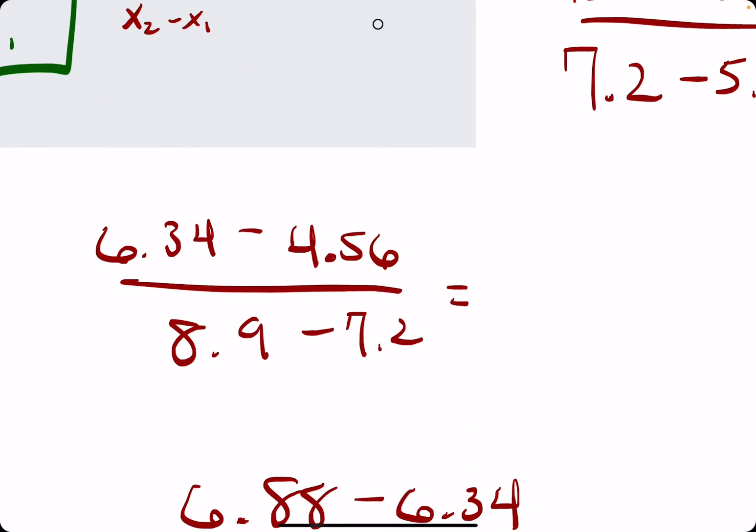And then for the third one we have 6.34 minus 4.56, that gives us 1.78, we're dividing that by 1.7 again it looks like, so we get 1.05 once we round.